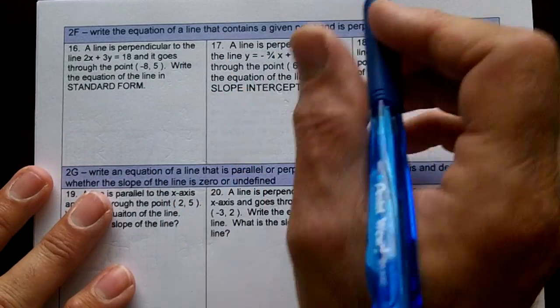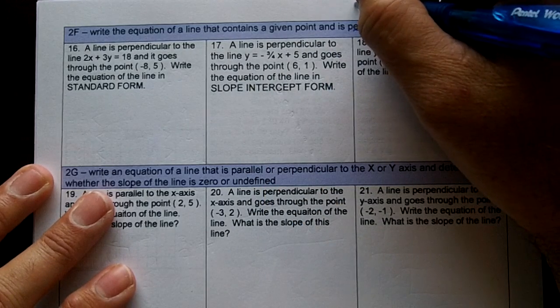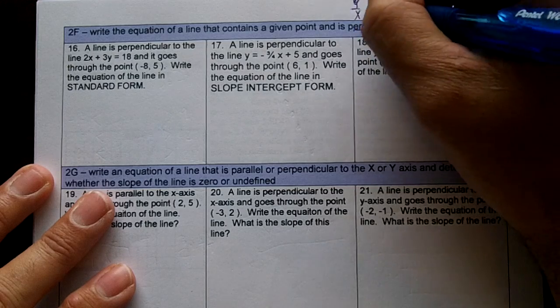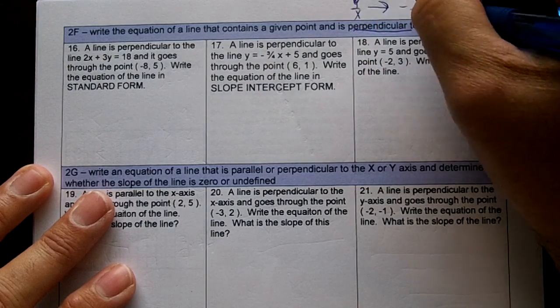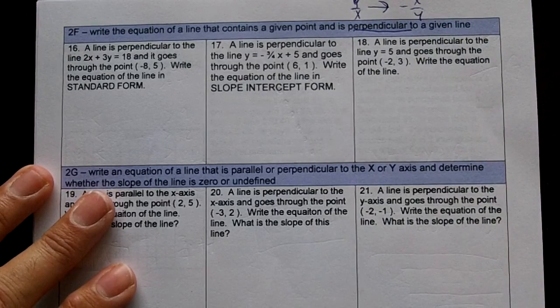Write the equation of a line that contains a given point and is perpendicular to a line. Remember, when a line is perpendicular, you're going to take your slope, let's say it's y over x, and you're going to change it to negative x over y. So you're going to take the opposite reciprocal of your slope when it's perpendicular.